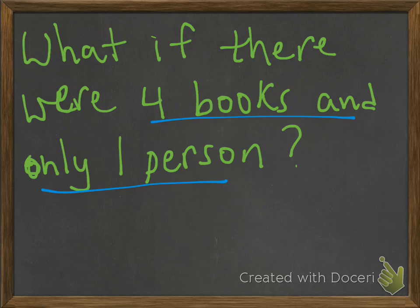Okay, did you find an answer? Well, it should be pretty easy. If you have four books divided by one person, that person's going to get four books. It's pretty simple.